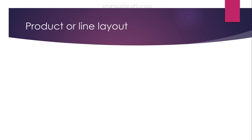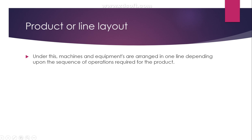Welcome back to the session on plant layout. In our previous video we have seen the various classifications with respect to layout. Among those, the first one we are going to study in detail is the manufacturing unit layout — product or line layout, also called assembly line layout. This layout is designed by arranging machines and equipment in one line depending upon the sequence of operations required for the product.